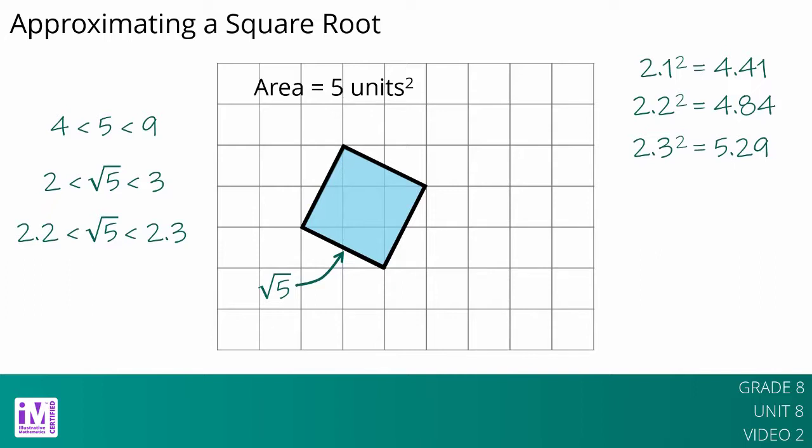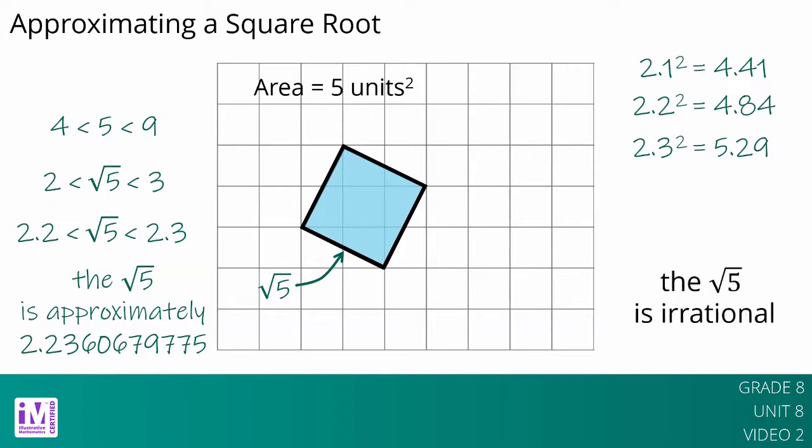If we wanted to keep going, we could try 2.25 squared and eventually narrow the value of the square root of 5 to the hundredths place. Calculators do this same process to many decimal places, giving an approximation like the square root of 5 is approximately 2.2360679775. Even though this is a lot of decimal places, it's still not exact because the square root of 5 is irrational. A more powerful calculator could give an even more precise approximation, but it would still be just that, an approximation.